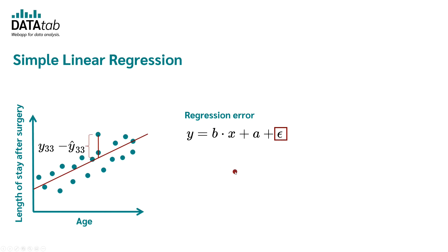The regression line always tries to map the given data with a straight line as best as possible, which always results in an error. This error is called epsilon. For example, if we estimate the length of stay for a 33-year-old person, our model says 5.82 days, but in fact the person stays 7 days. The difference between the estimated value and the true value is our error. This gives you a good overview of what a simple linear regression is.